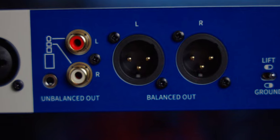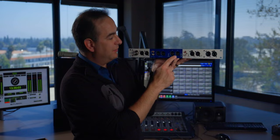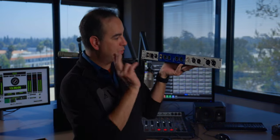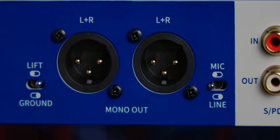You have balanced outputs. You have unbalanced outputs, which are RCA and eighth inch. You have a mono, a left plus right output. You have two of those and you can set them as line level or mic level.